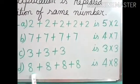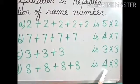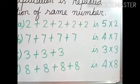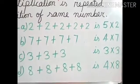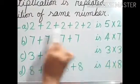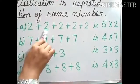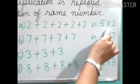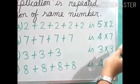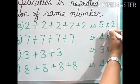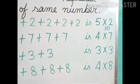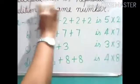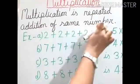So that means: how many times the digit is given, that we write in the first place, and the digit we write in the second place. Let us check: 2 plus 2 is 4, plus 2 is 6, plus 2 is 8, plus 2 is 10 — and this side also gives 10. Multiplication is repeated addition of the same number; same number addition we can write as a multiplication.